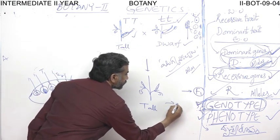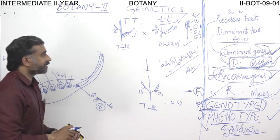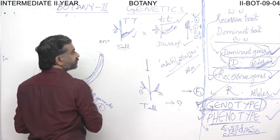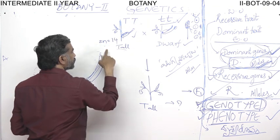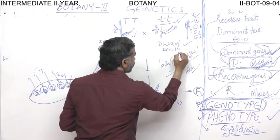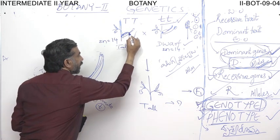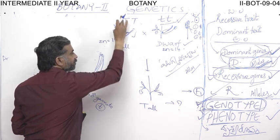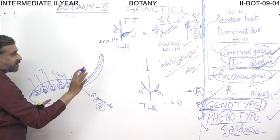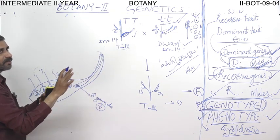Now, what is the genotype or which type of alleles are present in the F1 plant? The P plant is a diploid plant containing 14 chromosomes — diploid number 2n equals 14, that is 7 pairs of chromosomes. Here also the dwarf plant 2n equals 14, so 7 pairs of chromosomes are there. Whenever this female plant produces gametes, we know that gametes are always haploid, produced only after meiosis.